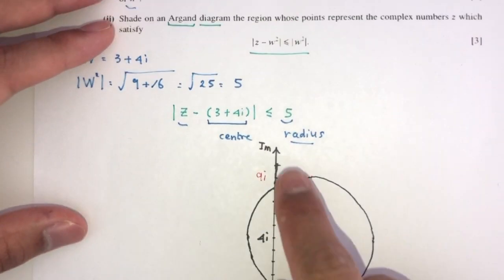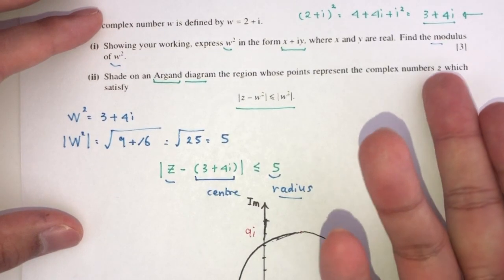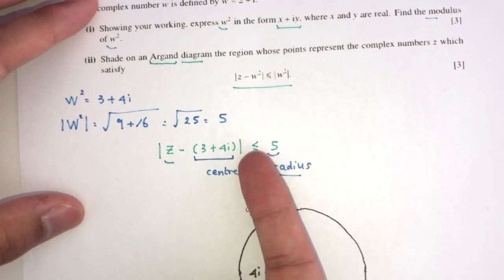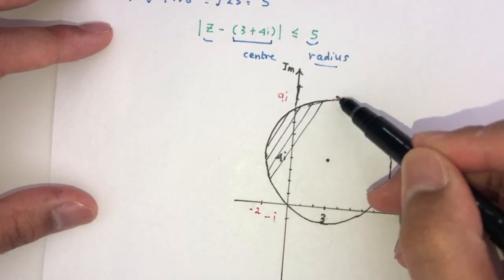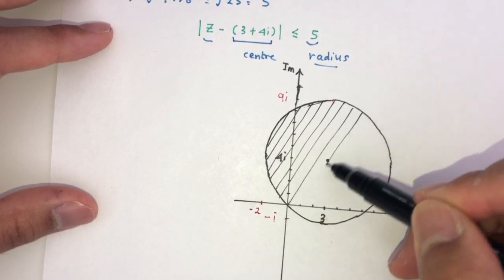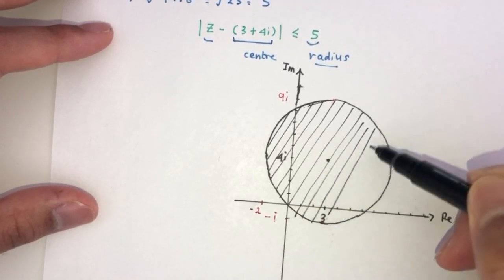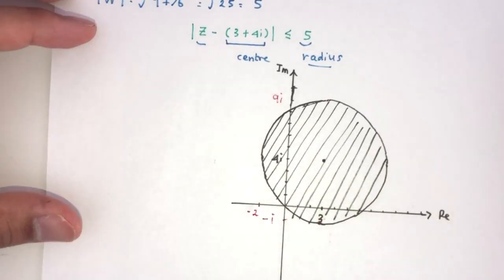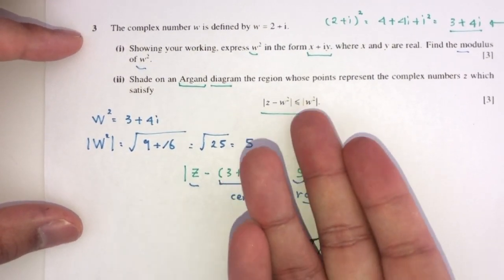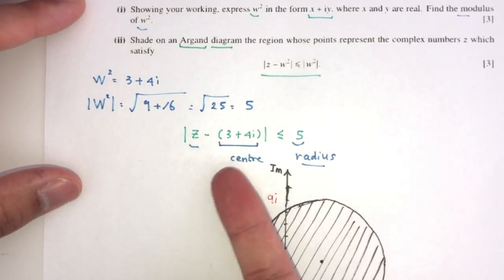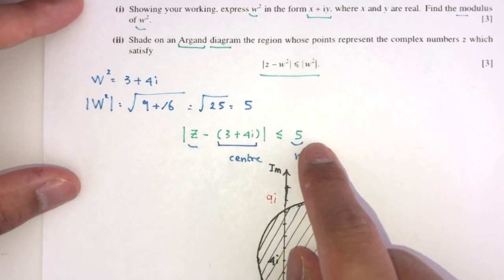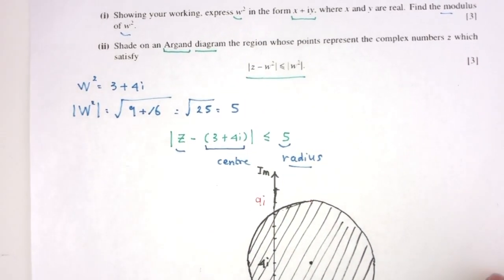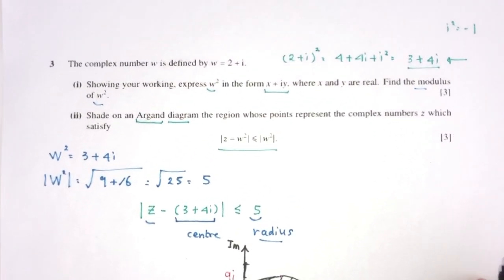The radius must be 5. Since the inequality is ≤ 5, we shade the inside of the circle with a solid boundary — all points inside and on the circle. The key idea is: whenever you see |z − a| ≤ r, it represents a circle with that center and radius, and you shade the interior.